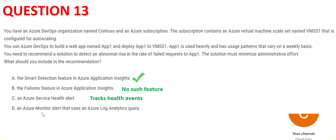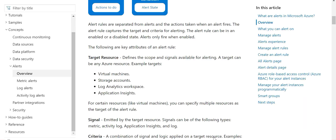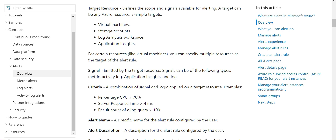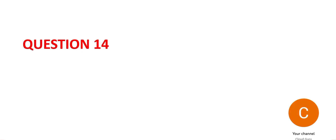Let's look at option D, Monitor Alert. Consider there is a virtual machine and the service is stopped. If after five minutes a user accesses it and gets an error because the service is stopped, we use Azure Monitor Alert to prevent such events. The threshold limits are set — for example, if CPU utilization is greater than 70% you get an alert. It is primarily used for infrastructure and app issues, not for performance or error-rate monitoring. So A is our answer.